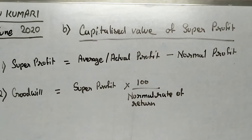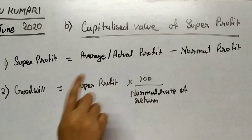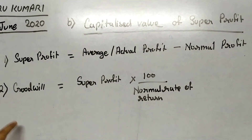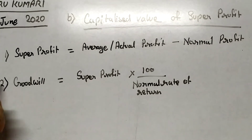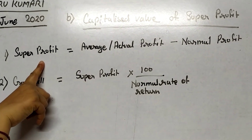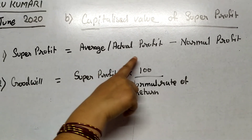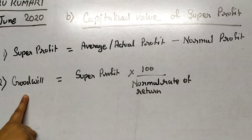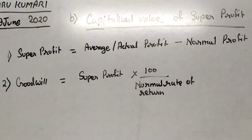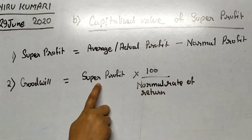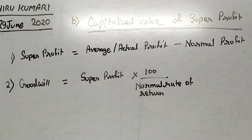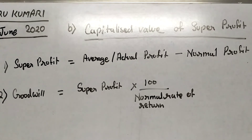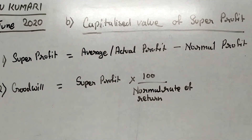The second method of the Capitalization Method is the Capitalized Value of Super Profit. Through this method, we calculate goodwill in two steps. In the first step, we calculate super profit: average profit or actual profit minus normal profit. In the second step, goodwill equals super profit multiplied by 100 divided by normal rate of return. In this way, we evaluate goodwill through the Capitalized Value of Super Profit method.